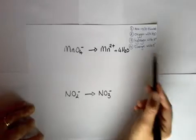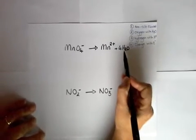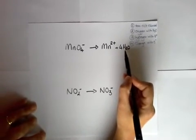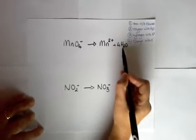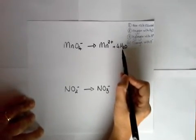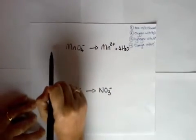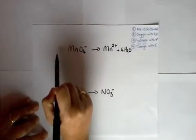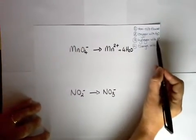Now of course this has now introduced us another problem we've just added some hydrogens. Now the hydrogens are in plus one oxidation state here so we have to balance them with exactly the same oxidation state that side. So we will balance them with H pluses.